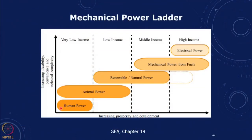With increasing prosperity, the process of progress started with human power, then animal power, then initial renewables with wind and water, and then everything shifted to fossil fuels with a centralized grid — coal, oil, natural gas, and electricity. Even for cooking there is an energy ladder where we go from solid fuels to gaseous fuels and electricity. With income, one actually moves toward using more convenient and cleaner fuels.